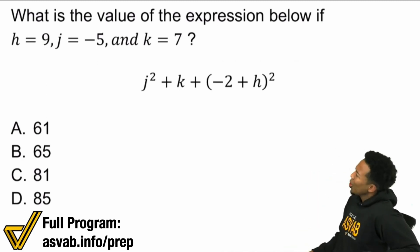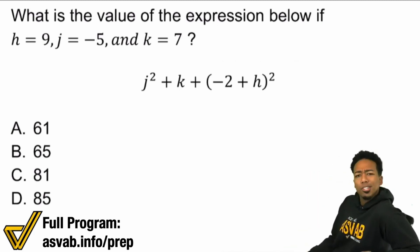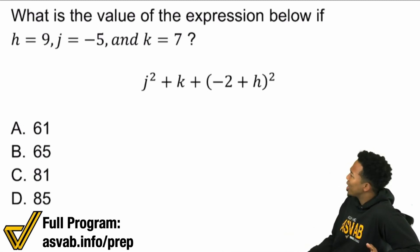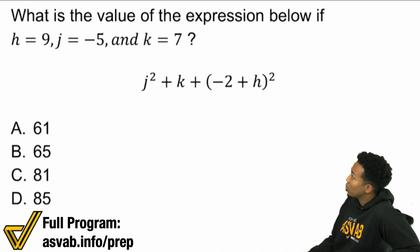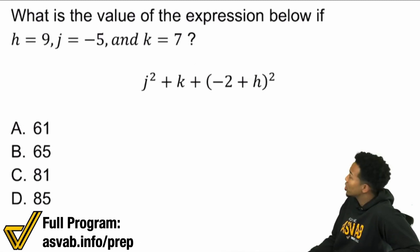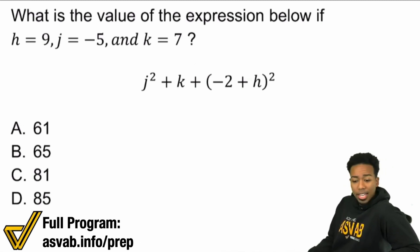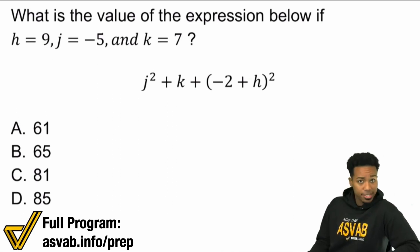So what is the value of the expression below if h equals 9, k equals 7, and j equals negative 5? So h is 9, j is negative 5, and k is 7.